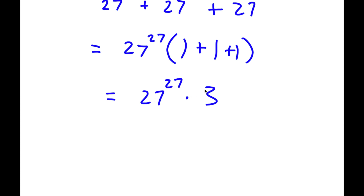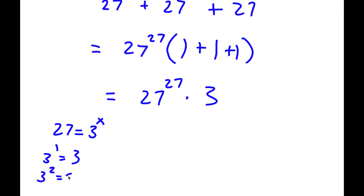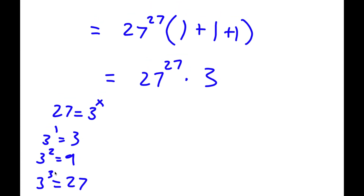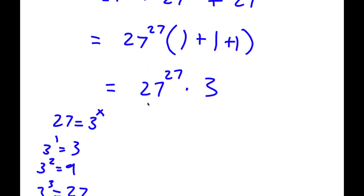Now if we want to multiply these two, we want them to have the same base. So 3 can't be simplified, so the only thing left to simplify is 27. Now 27 — this is equal to 3 to the power of what? Well, 3 to the power of 1 is 3, 3 to the power of 2 is 9, 3 to the power of 3 is 27. So 27 equals 3 to the power of 3, and then I would have 3 to the power of 3 to the power of 27, times 3 to the power of 1.